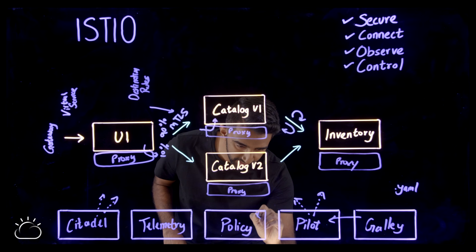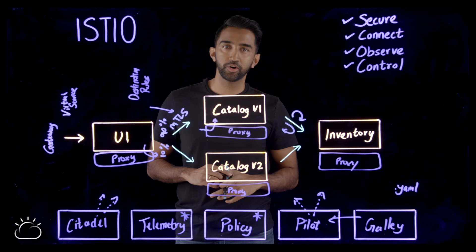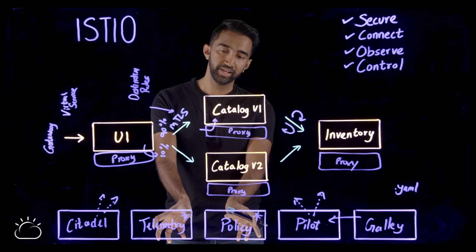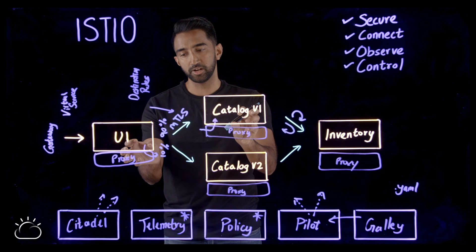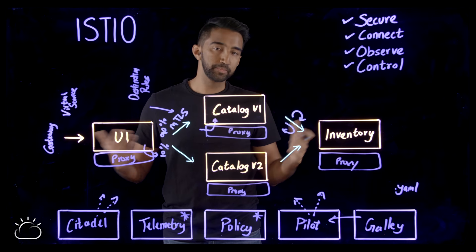I'm actually going to put policy and telemetry in asterisks because there's some refactoring that's going on with these components. The logic is being moved outside of this control plane and into the proxies themselves to avoid the additional network hop. This translates to improved performance.